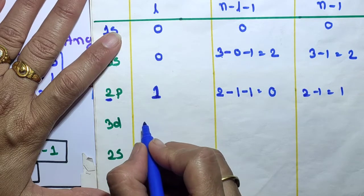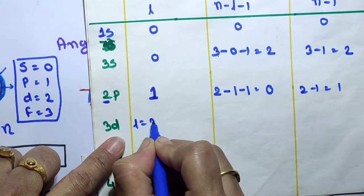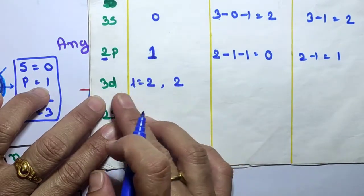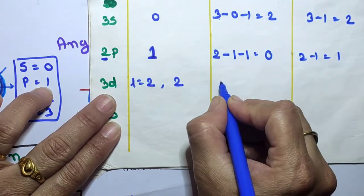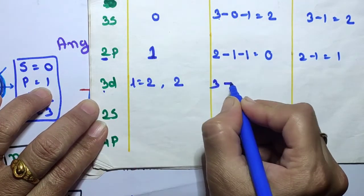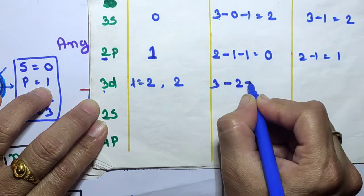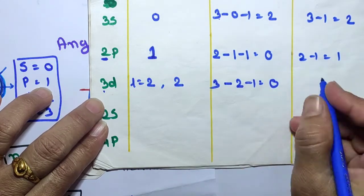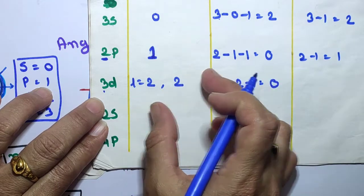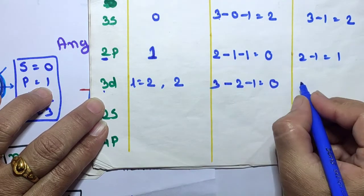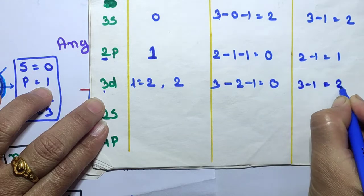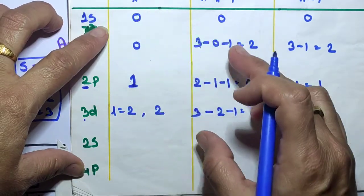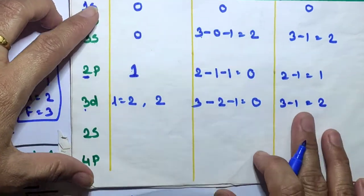For the 3d orbital, L = 2, so angular nodes = 2. Radial nodes = n − L − 1 = 3 − 2 − 1 = 0, so 0 radial nodes. Total number of nodes = n − 1 = 3 − 1 = 2, which equals angular nodes + radial nodes = 2 + 0 = 2.